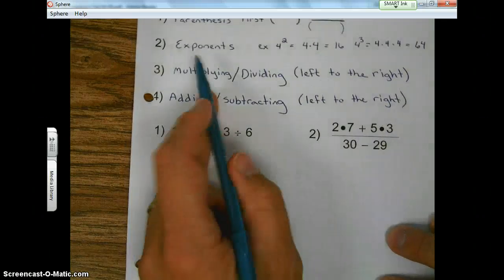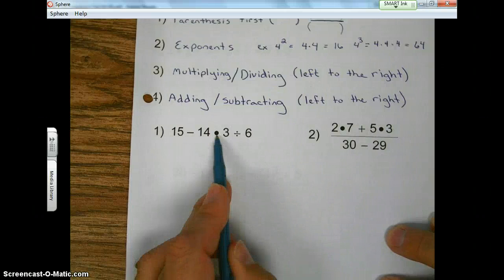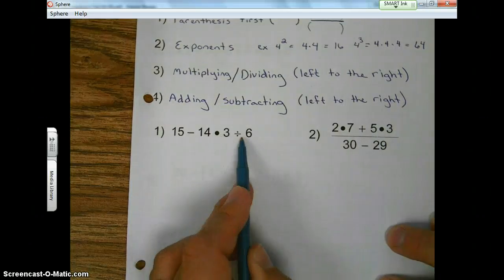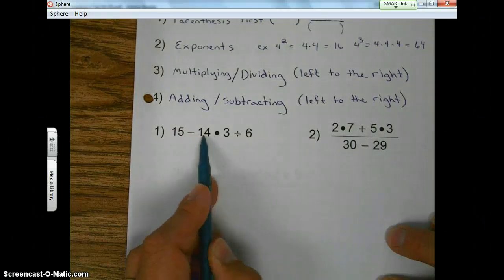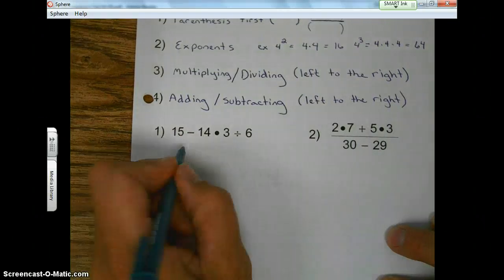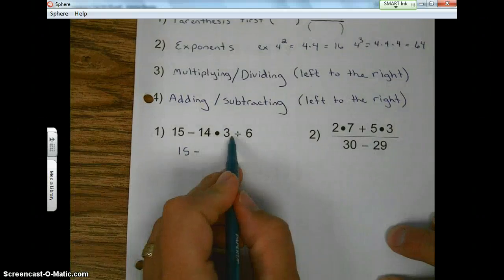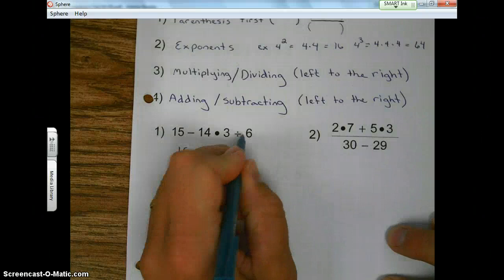So no parentheses, no exponents. The next step, any multiplying and dividing. Well, yes. Remember, the dot means product or multiply. This symbol means divide. So starting on the left side, we would do 14 times three first. So we would get 15 minus 14 times three, 42, divided by 6.